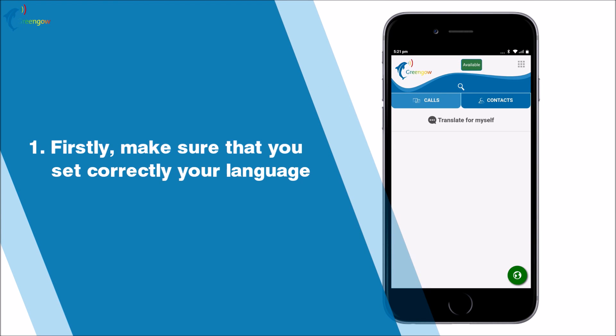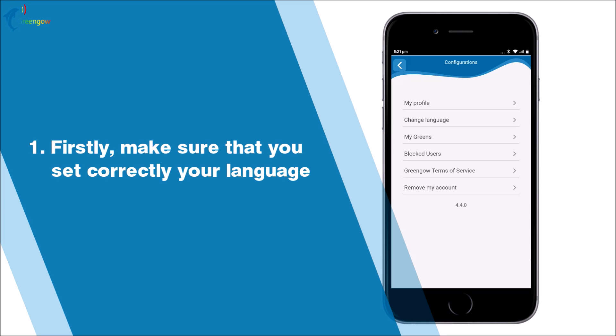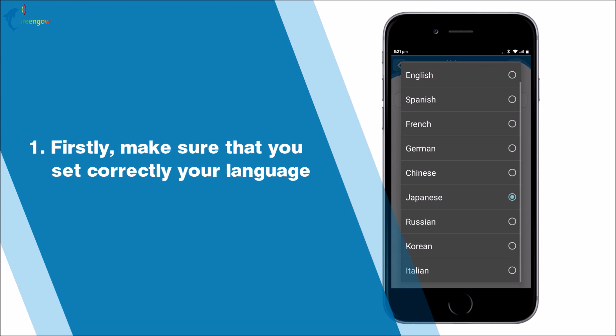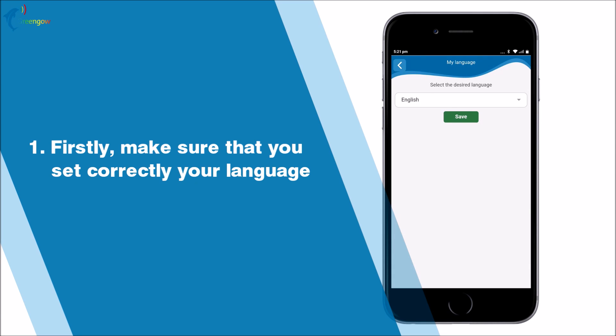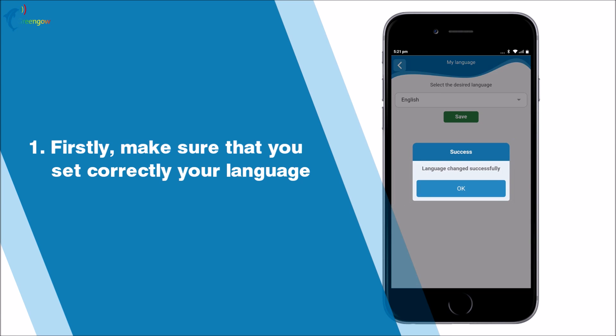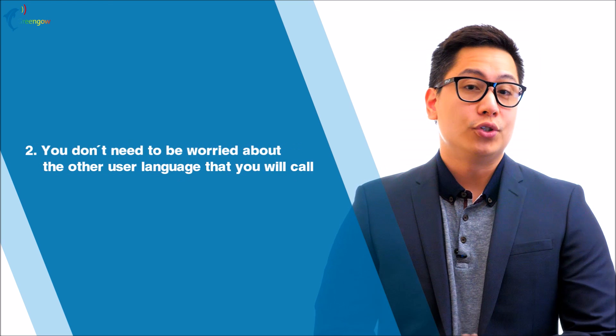Before starting, let's pay attention to some items. First, make sure that you set correctly your language. To do that, go to configurations, change language, and choose your language. Note: this is the language that you should speak when using the push-to-talk button. If you speak in a different language, Green Go will not transcribe correctly your message.